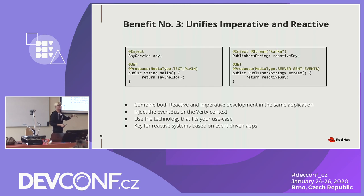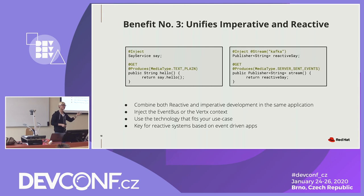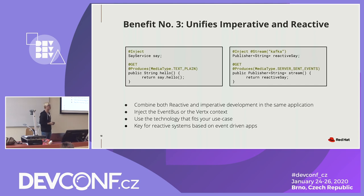One concern they had: there are two types of technology stacks — traditional application and integration application — but both using Java. With Quarkus you don't need to worry about that. You use different annotations: inject for CDI injection, and streaming annotations like '@Incoming' and '@Outgoing.' If you add the '@Incoming' annotation on your Java method, Quarkus auto-wires your method as event-driven, linking to the Kafka cluster. You just need to define where your Kafka cluster is in the application properties.